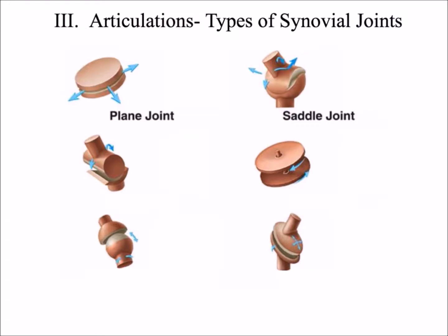The third type is the hinge joint. As the name implies, a hinge joint resembles the hinge of a door. Examples of hinge joints are the elbow and the knee.